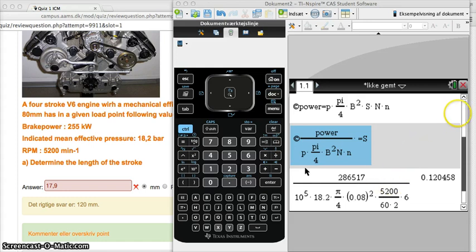What you want to do is divide all the values on the right side here with pressure, pi divided by 4, times the bore to the power of 2, times the number of rounds per minute, and the number of cylinders. If I do that, the only thing left on the right side is the stroke.